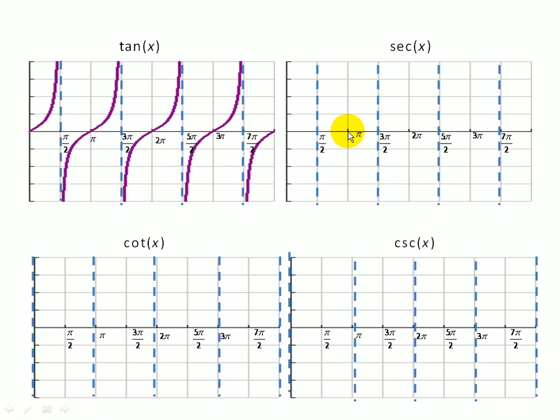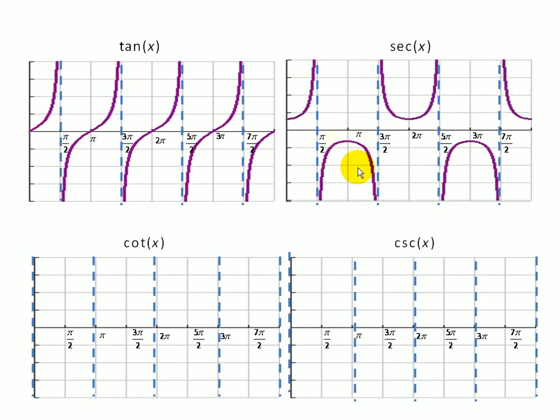Well, remember, at pi, cosine is equal to negative one. So that tells us we're going to be below the axis, concave down, and then we simply alternate. So there you have it, tangent and secant.